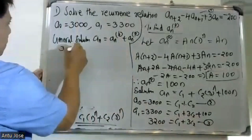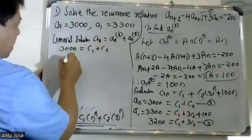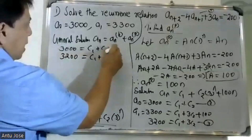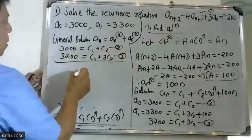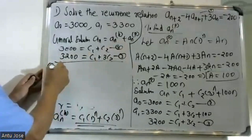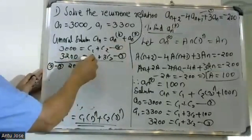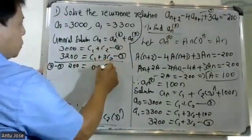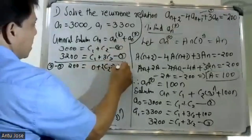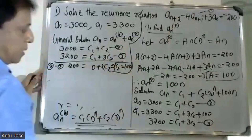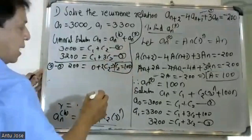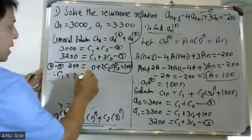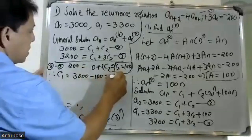From the two equations: C1 plus C2 equals 2900 and C1 plus 3·C2 equals 3200. Subtracting gives 2·C2 equals 300, so C2 equals 100. Then C1 equals 2900 minus 100 equals 2800.